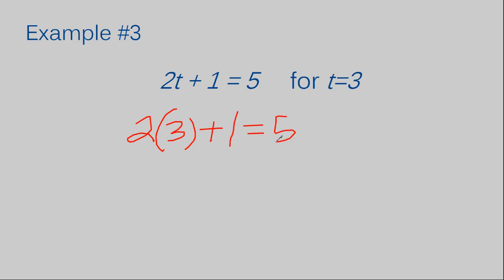And you probably noticed that I put my 3 in parentheses. That is because if I were to write my 3 directly next to the 2, it's going to look like a 23. And I need to make sure I understand the operation that's in between these two numbers. The operation that's in between the 2 and the t is multiplication. So I need to make sure I continue multiplication. And you can write multiplication by putting one of your terms in parentheses.